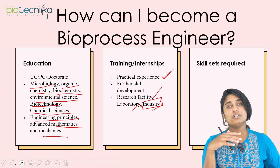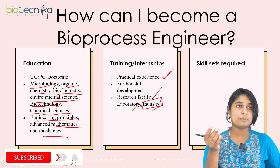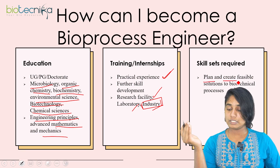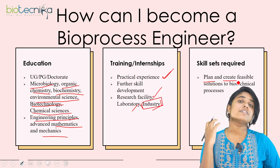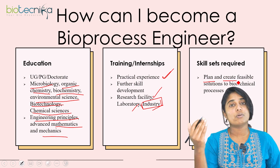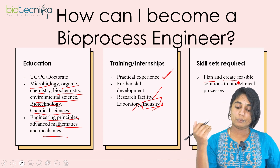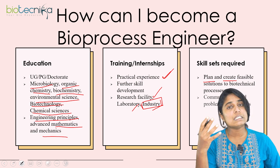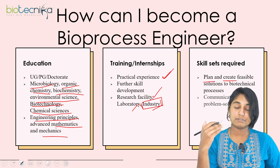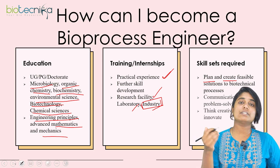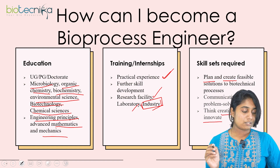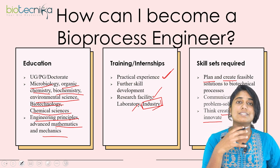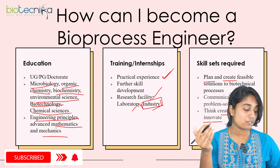The skill sets required to become a bioprocess engineer include: first, the ability to plan and create feasible solutions to biotechnical problems, being creative and innovative in designing and improving products. Second, communication and problem-solving skills, since bioprocess engineering always involves teamwork. Third, the ability to think creatively and innovatively. These are the skill sets along with the education and training necessary to enter this field.